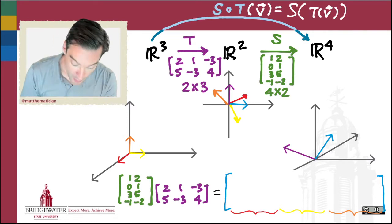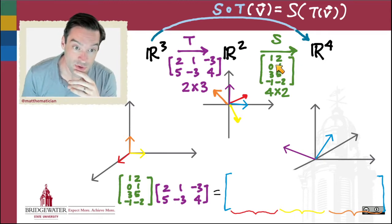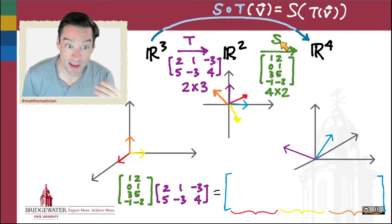In this example, we're given two linear transformations T and S. We know their standard matrices, and we're trying to find a standard matrix for their composition S of T—so T first followed by S.